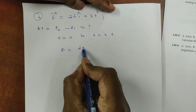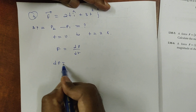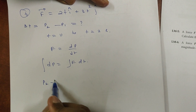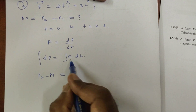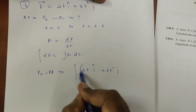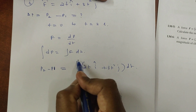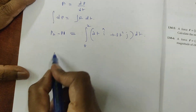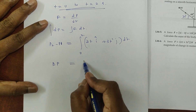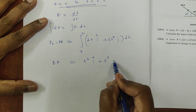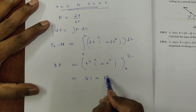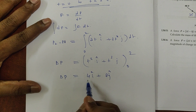By definition, force is the rate of change of momentum, so dp = F dt. Integrating: delta p = integral from 0 to 2 of (2t î + 3t² ĵ) dt. Integration gives t² î + t³ ĵ evaluated from 0 to 2. Substituting: delta p = 4î + 8ĵ. This is the change in momentum in vector notation.